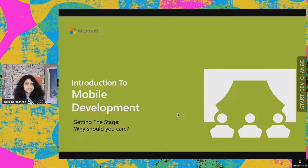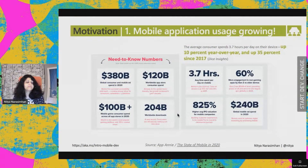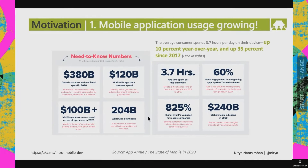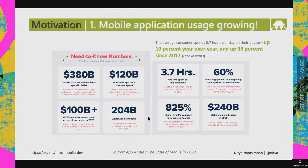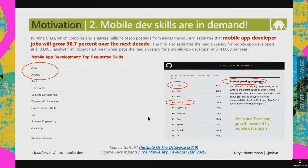Why should you care? Mobile app usage is growing 10% year over year, and 35% since 2017, driven by the fact that we're all addicted to our phones — a mobile user spends over three and a half hours on their phone every day. As a developer, mobile app developer jobs are predicted to grow 30% over the next decade, with Java and Android tending to be at the top. The GitHub Octoverse report also shows that Dart and Kotlin — both targeting the mobile ecosystem — are among the fastest-growing languages developers are learning today.